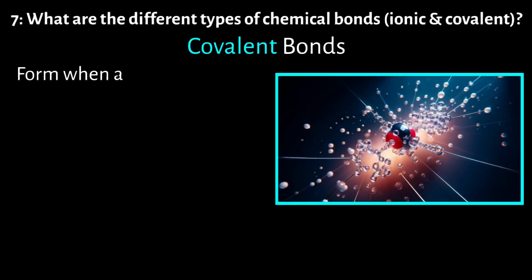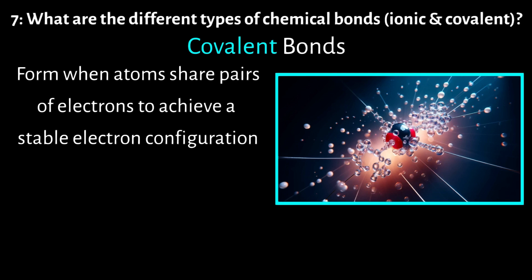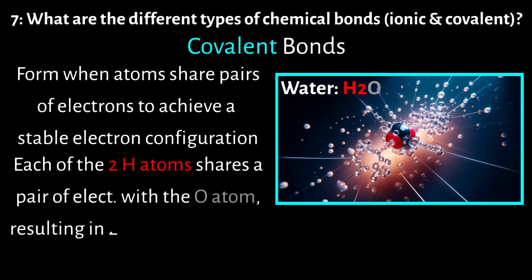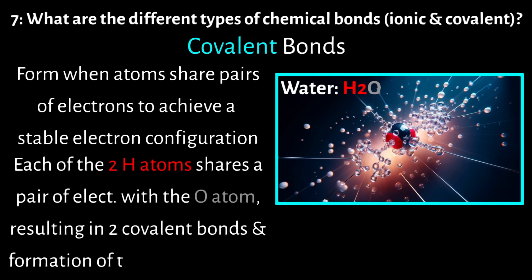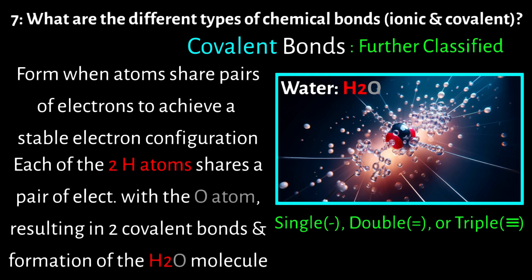Covalent bonds form when atoms share pairs of electrons to achieve a stable electron configuration. For example, with water (H2O), each of the two hydrogen atoms share a pair of electrons with the central oxygen atom, resulting in two covalent bonds and the formation of the H2O molecule. Covalent bonds can be further categorized as single, double, or triple bonds based on the number of electron pairs shared.